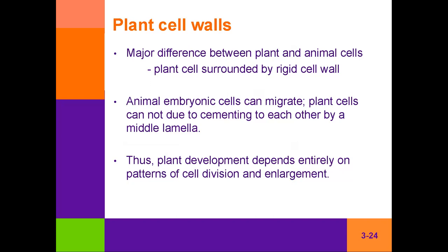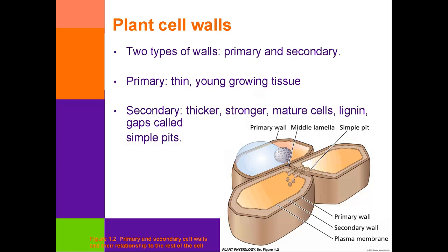There are two types of cell walls. All cells have a primary cell wall — the thin tissue surrounding a cell which is laid down first. Some cells then mature and create a secondary cell wall, which is thicker and stronger and contains the substance lignin. In woody tissue, we see cells with this secondary cell wall, which provides a lot of strength for the plant.